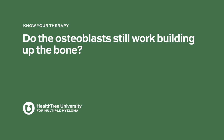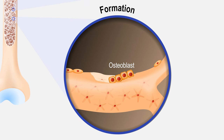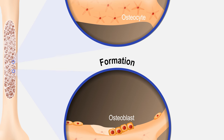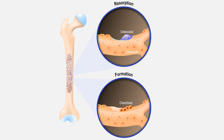Do the osteoblasts still work building up the bone? Yes, the osteoblasts work better because the osteoclasts are not there. There's usually a balance between osteoblasts, which build up the bone, and osteoclasts, which destroy the bone. When you disrupt that balance by eliminating osteoclasts, the osteoblasts work better.